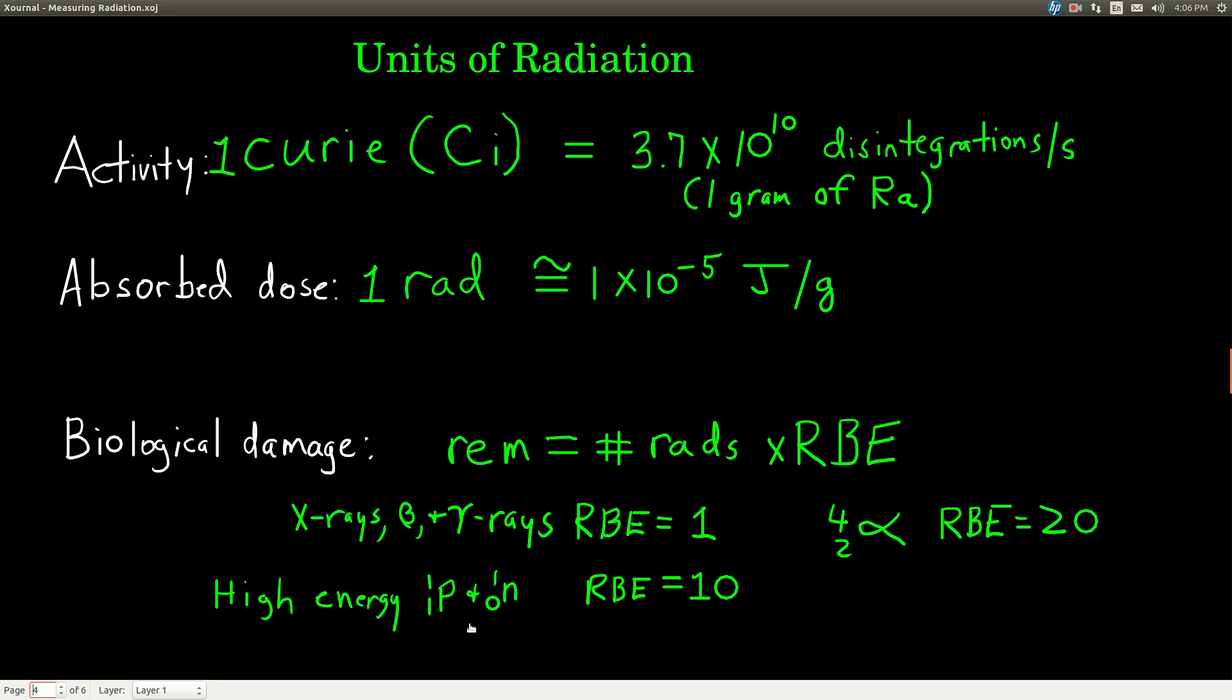If it's a high energy proton, or a neutron, then the RBE is 10. So you multiply the number of rads times 10, so it can do more damage. And if it's an alpha particle, then the RBE is 20. And you multiply the number of rads times 20 to get how much damage, or the REMs, that it can do.